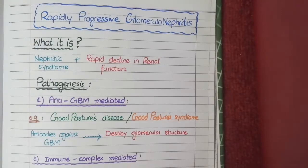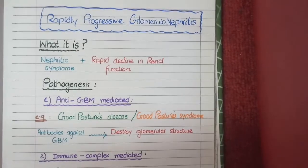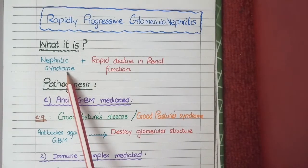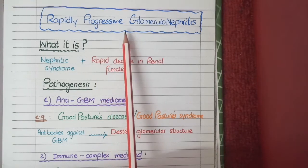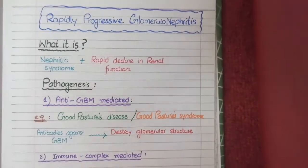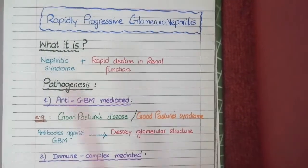Rapidly progressive glomerulonephritis is not just a glomerulopathy of an absolutely different type. Rather, any cause of nephritic syndrome that becomes so rapidly progressive that it causes a rapid decline in renal function will be categorized as rapidly progressive glomerulonephritis. So technically, rapidly progressive glomerulonephritis means nephritic syndrome plus rapid decline in renal function.